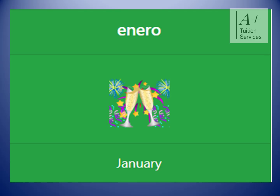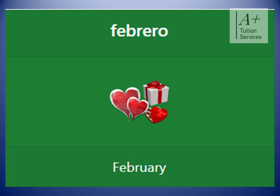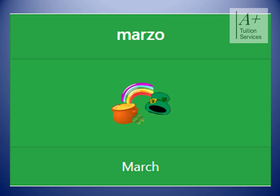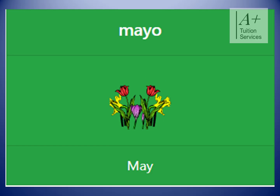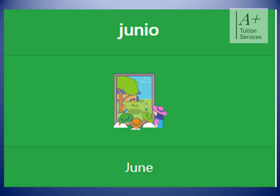Enero, which means January. Febrero, which means February. Marzo, which means March. Abril, which means April. Mayo, which means May. Junio, which means June.